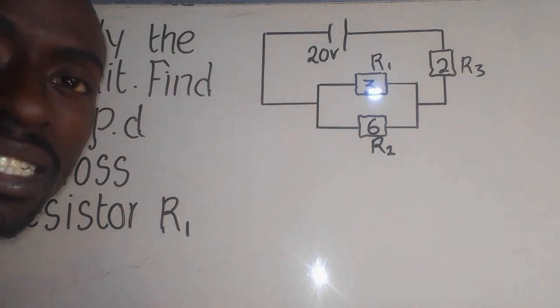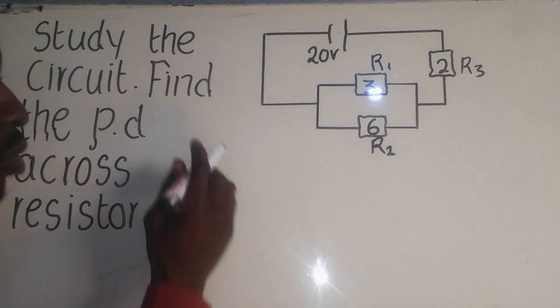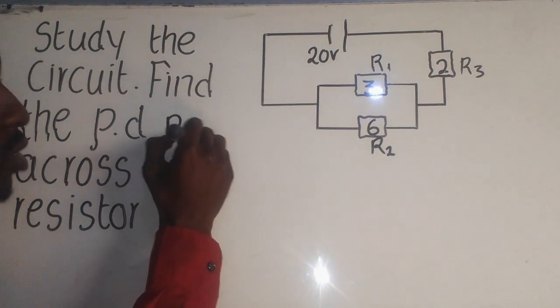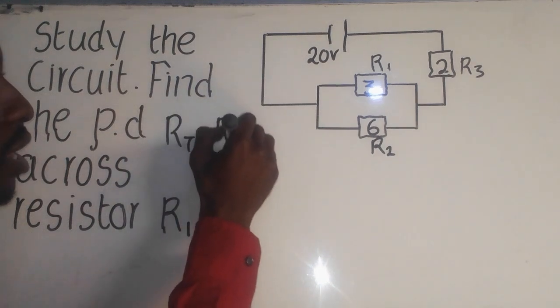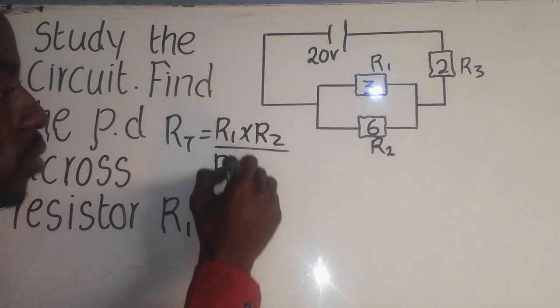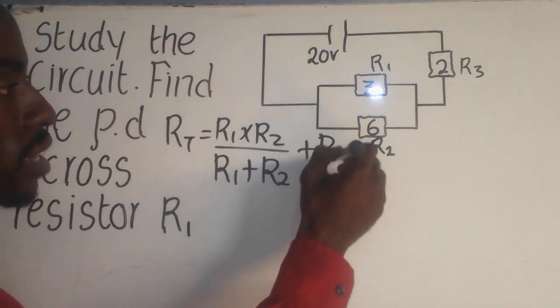Now, you need to understand that the first step, we need to find the total resistance. So, the total resistance will be found like this. This one total, it is equal to R1 times R2 over R1 plus R2, plus R3 there.